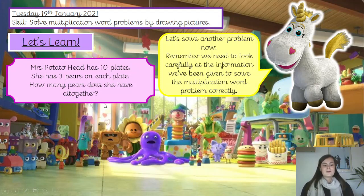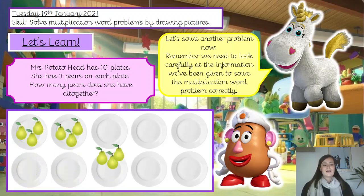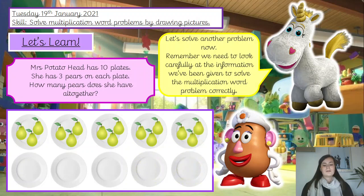Similarly to the question before, it's asking us to find the amount she has got in total. That word 'altogether' again — it means the big total. So how are we going to work this one out? Mrs Potato Head has got ten plates. What do I need to do now? As the word problem tells us, she needs three pairs on each plate. So now I'm going to draw my three pairs on each plate. We're using our method — our pictures — to solve the answer.